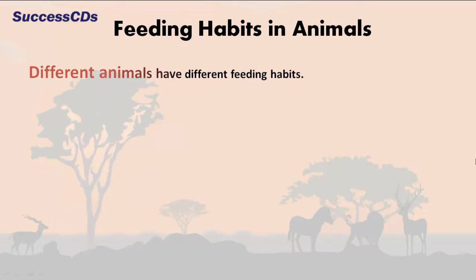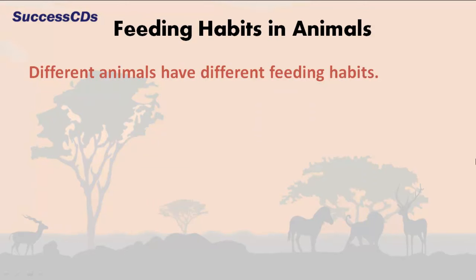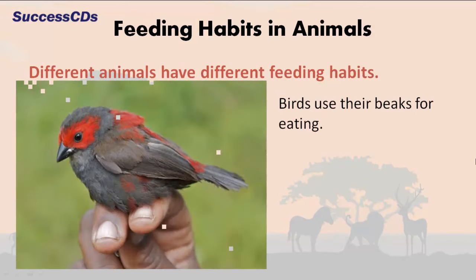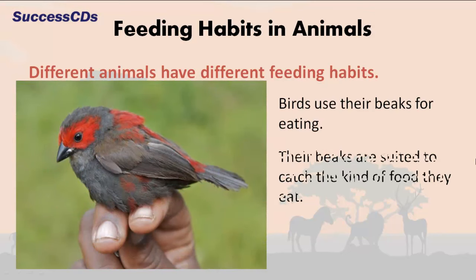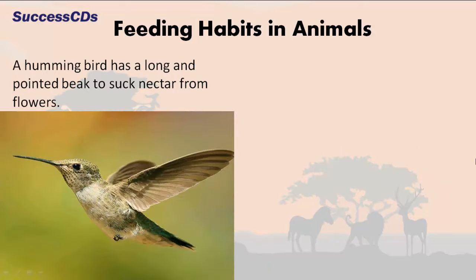Different animals have different feeding habits. Birds use their beaks for eating. Their beaks are suited to catch the kind of food they eat. A hummingbird has a long and pointed beak to suck nectar from flowers.